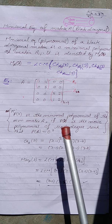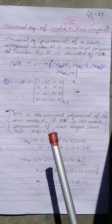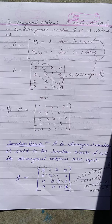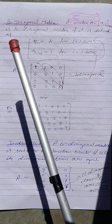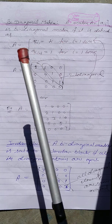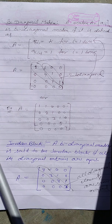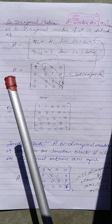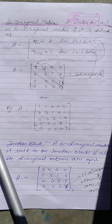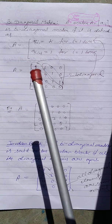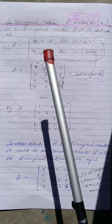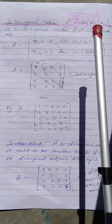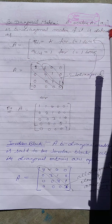The second important topic for learning Jordan canonical form is the bidiagonal matrix. A bidiagonal matrix is a matrix in which all the diagonal elements are eigenvalues and all the superdiagonal elements are always equal to one, defined as A = [a_ij] for an n×n square matrix.